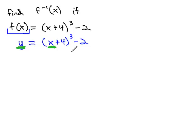x becomes y and y becomes x, we're going to switch the x's and y's. Wherever there's an x, we're going to write y. Wherever there's a y, we're going to write x. So it becomes x equals y plus 4 cubed minus 2.